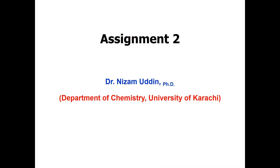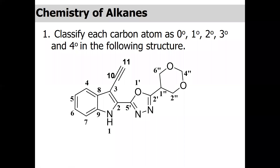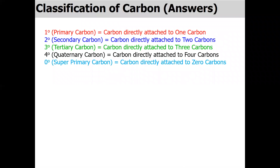The first question in assignment number two was: how to classify each carbon atom as zero, one, two, three, and four degree in the following structure. Before I discuss the solution, let me clarify some terms. One degree, or primary carbon, is the carbon when it is directly attached to one carbon.